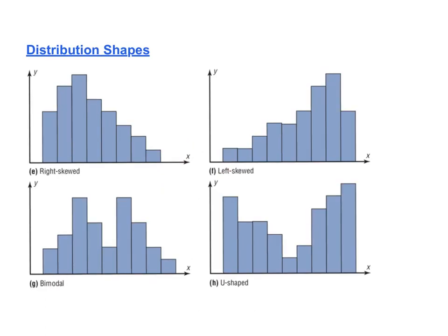The next four are a little trickier. Bimodal has two peaks — it drops back down in the middle and also on the other side. Think of it as two humps or an M shape. The U-shape also has two peaks on the left and right, except it doesn't drop back down on the other side. That's how you keep those two straight: if it comes back down on the other side of both peaks, it's bimodal; if not, it's a U-shape.